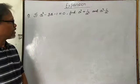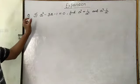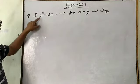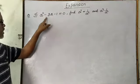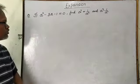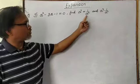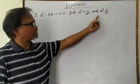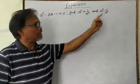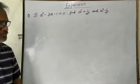But the question is given like this: a squared minus 3a minus 1 is equal to 0. Then find a squared plus 1 by a squared, and a squared minus 1 by a squared.